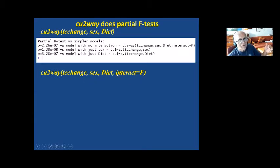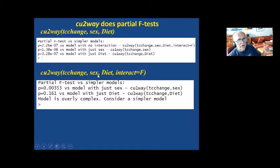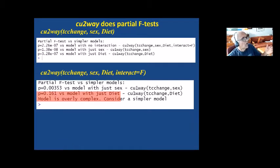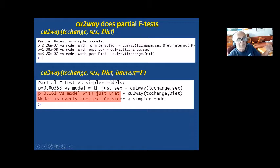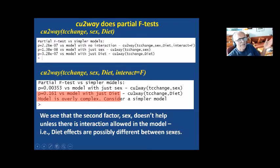Suppose you had stopped with the two-factor model without interaction. It proceeds to compare with simpler models, but a model with interaction is not a simpler model, so it doesn't compare with that. It just compares with a model with just sex or just diet. What you see is that this is not significant — a two-factor model without interaction doesn't improve over a single-factor model with just diet. So if you're not considering interaction, the simpler model is preferred.